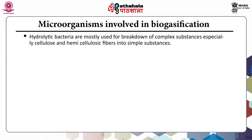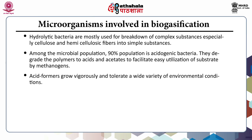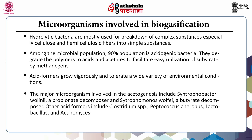The microorganisms involved in the process include hydrolytic bacteria, which cause the breakdown of complex substances — especially cellulose and hemicellulose — into simple substances. Among the microbial population, 90% is acetogenic bacteria; they degrade polymers to acids and acetates, facilitating easy substrate utilization by methanogens. Acid formers grow vigorously and tolerate a wide variety of environmental conditions. Major microorganisms in acetogenesis include Syntrophobacter wolinii, a propionate decomposer, and Syntrophomonas wolfei, a butyrate decomposer.